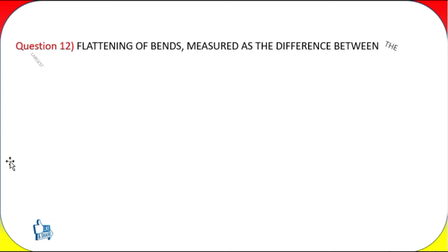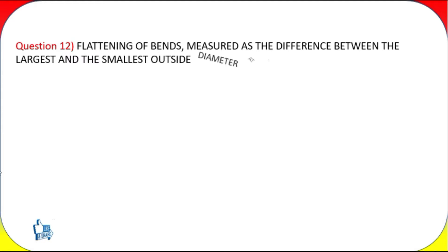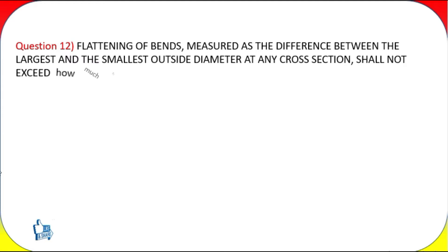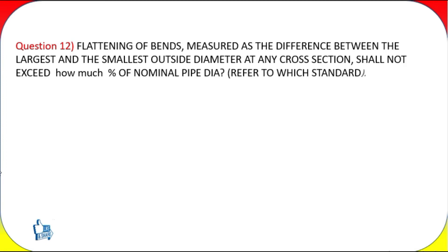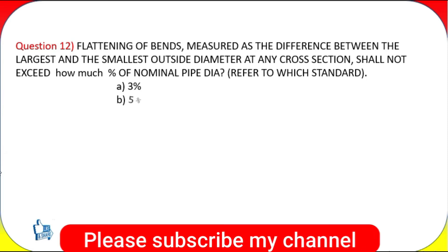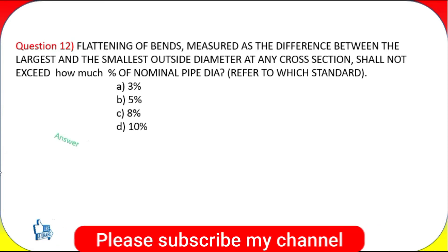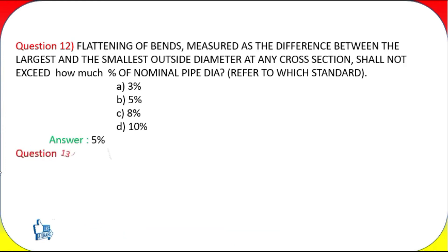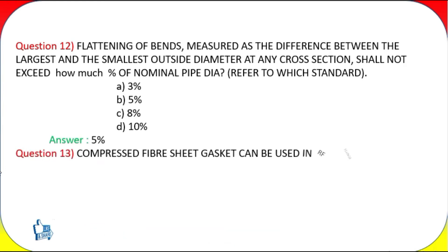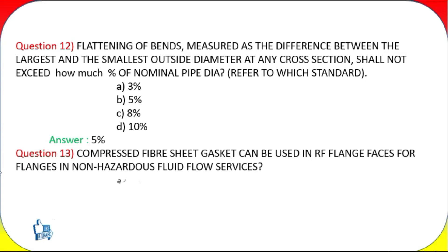Question 12: Flattening of bends, measured as the difference between the largest and smallest outside diameter at any cross section, shall not exceed how much percent of nominal pipe diameter? Options: (a) 3%, (b) 5%, (c) 8%, (d) 10%. Answer: 5%.